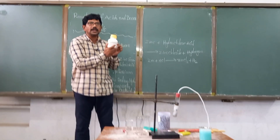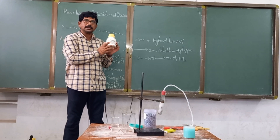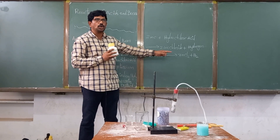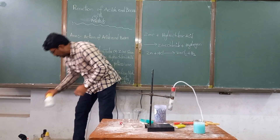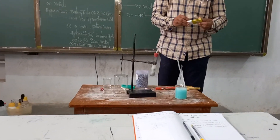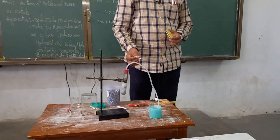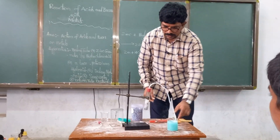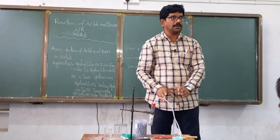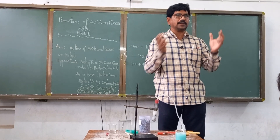Potassium hydroxide pellets dissolved in distilled water give potassium hydroxide solution. What happens when a metal reacts with a base? The same thing happens — it produces hydrogen. Once again I will do this with the base. A lot of gas is formed and bubbles are produced. I am doing another experiment by taking a base. The metal is the same — zinc. In place of acid, I am taking a base: potassium hydroxide, or you can take sodium hydroxide.